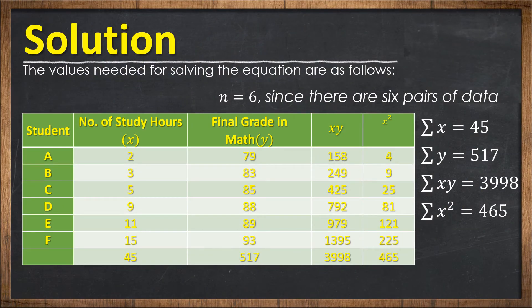Solution: the values needed for solving the equation are as follows. n equals 6, since there are six students numbered 1 through 6. The total number of hours, summation of x, is 45. If we add 2 up to 15, that is 45. Summation of y, the final grades from 79 up to 93, equals 517.